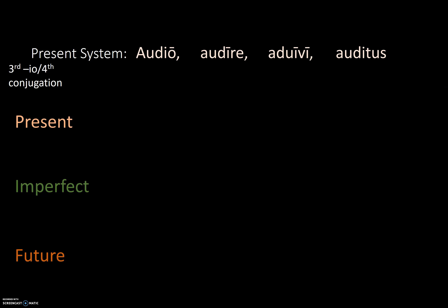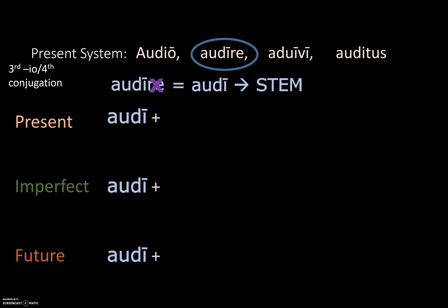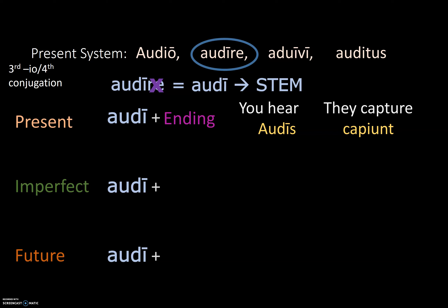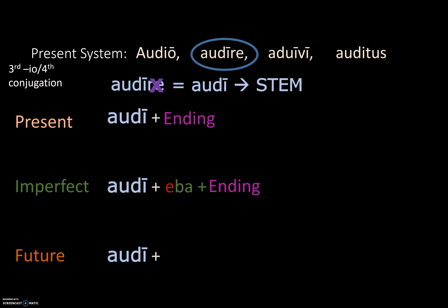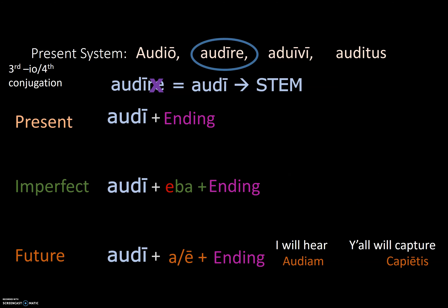Third-IO and fourth conjugation verbs behave very similarly. Using a fourth conjugation verb, we go to the second principal part, drop RE, and get our stem. For the present, we add our endings directly, giving forms like AUDIS (you hear). Note that the third-IO CAPIO retains the U of the third and the I of the fourth. In the imperfect, we add BA plus an E, then the ending — AUDIEBAMUS. For the future, we again use A or E: AUDIAM (I will hear) or CAPIATIS (y'all will capture).